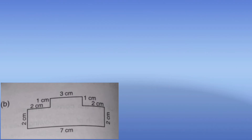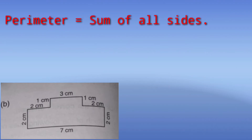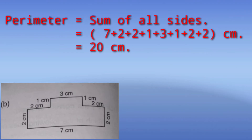Part b: the shape looks like a podium. Adding all the sides: 7 + 2 + 2 + 2 + 1 + 3 + 1 + 2 = 20 cm.